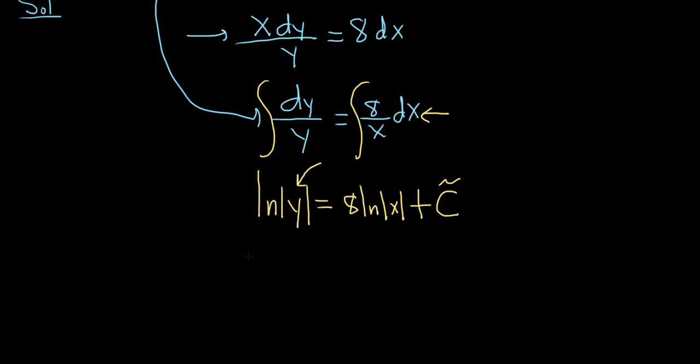So to get rid of the natural log, this is a key step. We exponentiate both sides. So you put an e here, and you put an e here. And so this entire piece here is your exponent. These cancel...